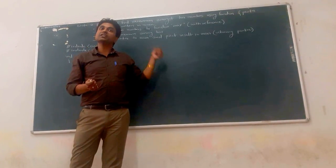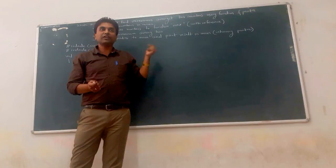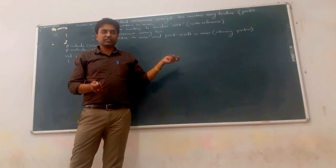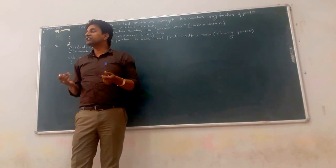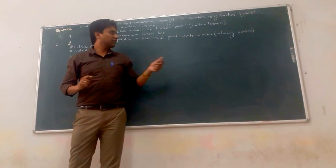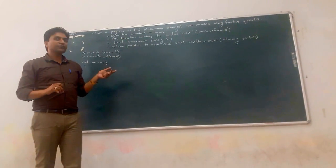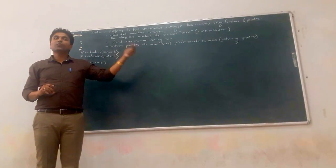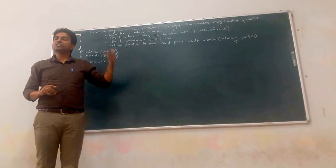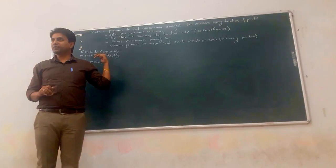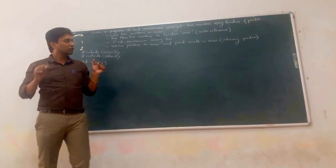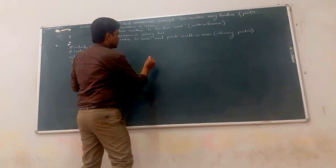The max function returns a value — whichever number is maximum — but it returns it by pointer, meaning it returns an address. We can pass pointers or addresses to the max function, and the max function returns a pointer, meaning an address.